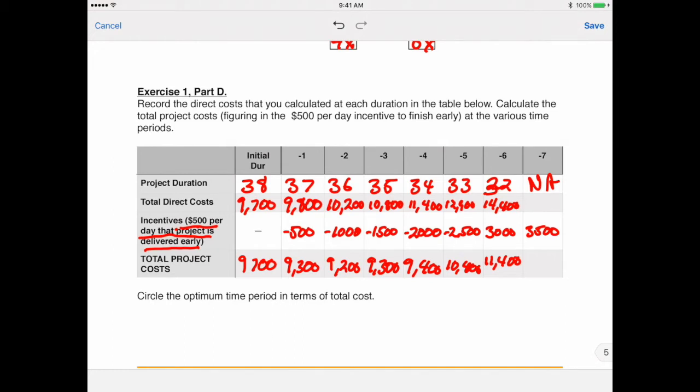And it looks like our lowest cost is right here. So it looks like it would benefit us to actually crash this by two days. And that would be the cheapest for our company or the maximum profit if we were doing this for another company. So hopefully that helps answer a few questions about how we proceed through these crashing exercises.